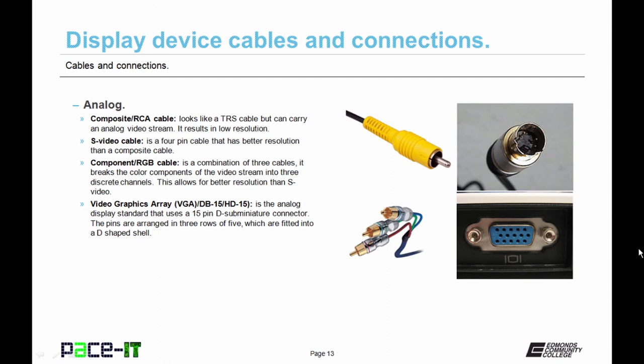Moving onward and upward, we have the component or RGB cable. Now this is a combination of three cables. It breaks the color components of the video stream into three discrete channels. This allows for better resolution than S video and composite. And finally we have the VGA, the video graphics array, which can also be called a DB15 or an HD15. Now this is an analog display standard that uses a 15-pin D sub miniature connector. That's the DB15 connector. The pins are arranged in three rows of five, which are fitted into a D-shaped shell.